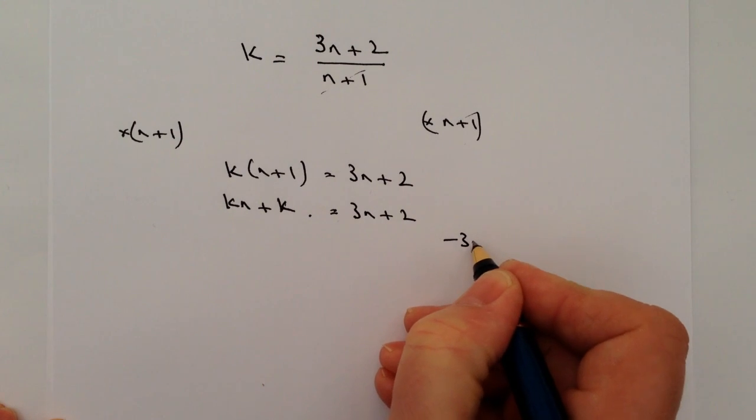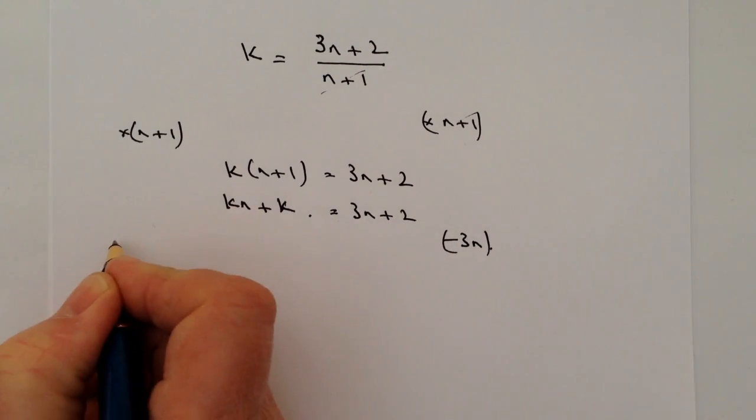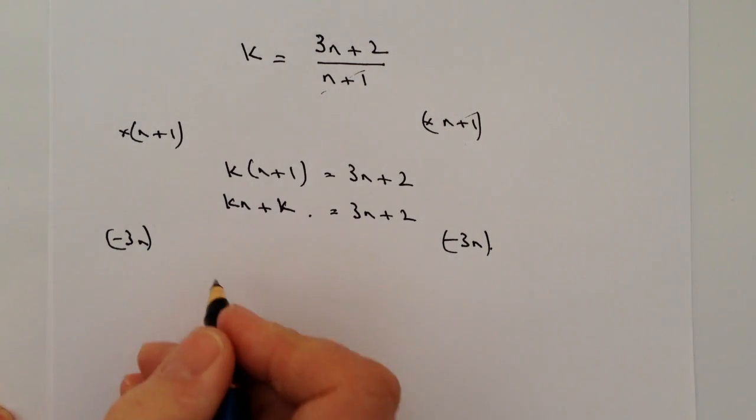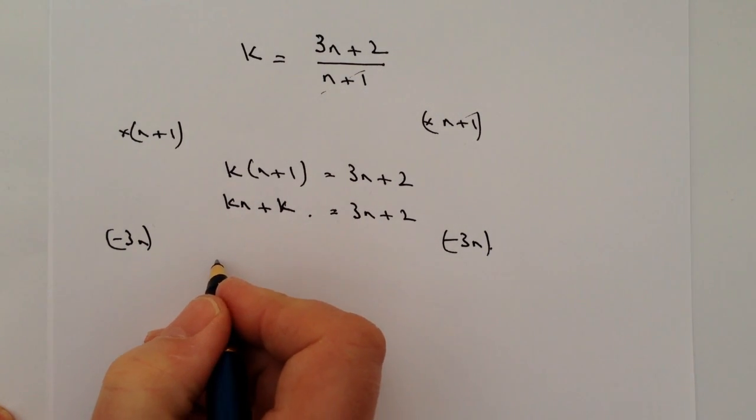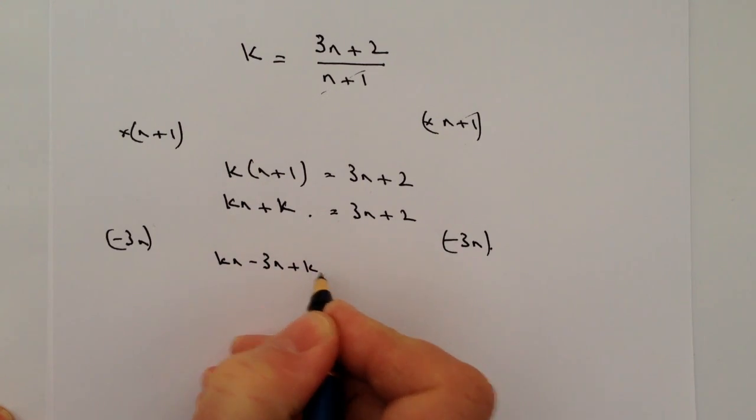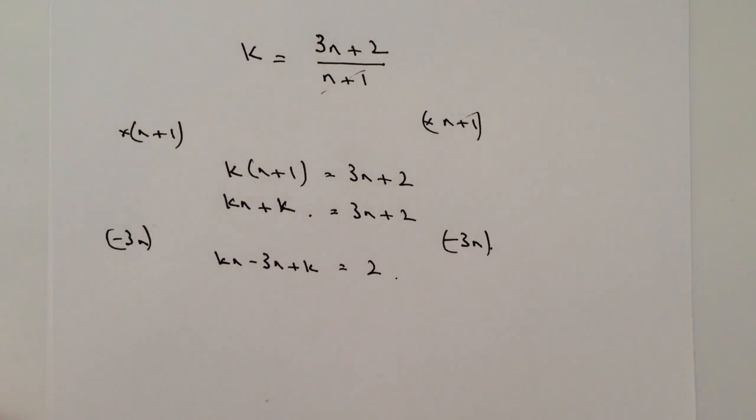So if I do that by minusing 3n over here and minusing 3n over here, it means then I end up with kn minus 3n plus k equals 2.